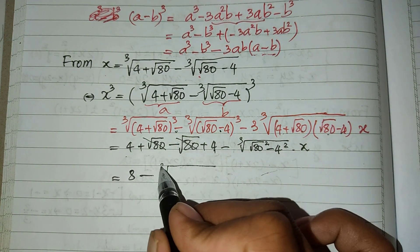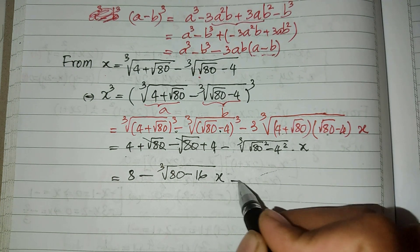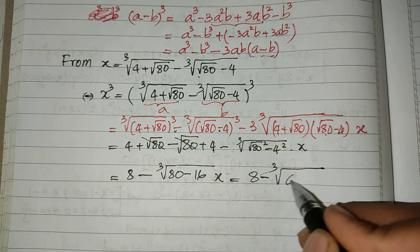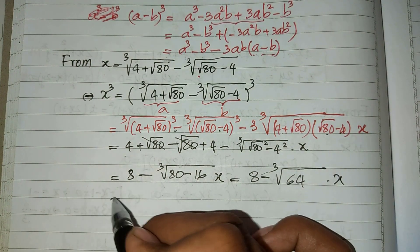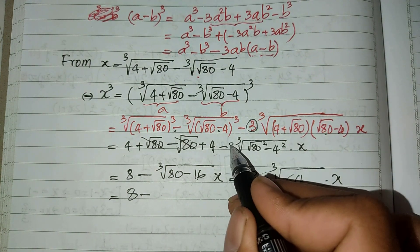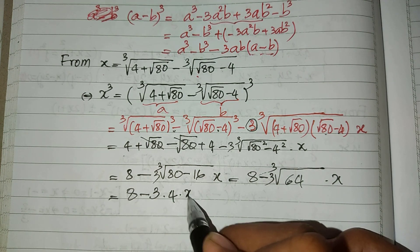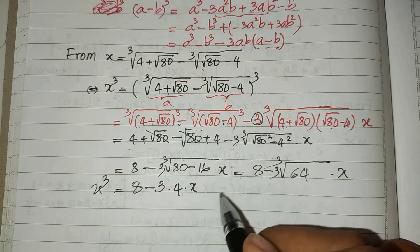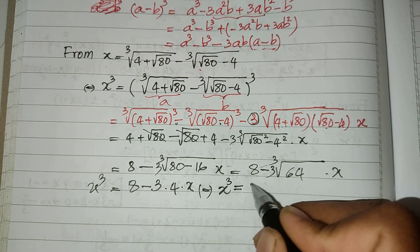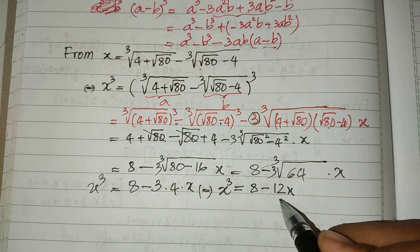So this equals the cube root of: H minus 16 times 8, and it equals H, minus the cube root of 64, multiplied by it. Including the 3 we forgot, these 3s multiply to give 4, and multiplied by H power 3. This is equal to 8 minus 12A.